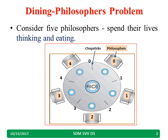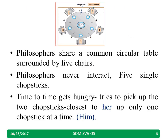Consider 5 philosophers who are spending their lives thinking and eating. They share a common circular table as shown in this figure. Philosophers never interact — they do not talk to each other — and there are 5 single chopsticks on the table, numbered 0, 1, 2, 3, 4.